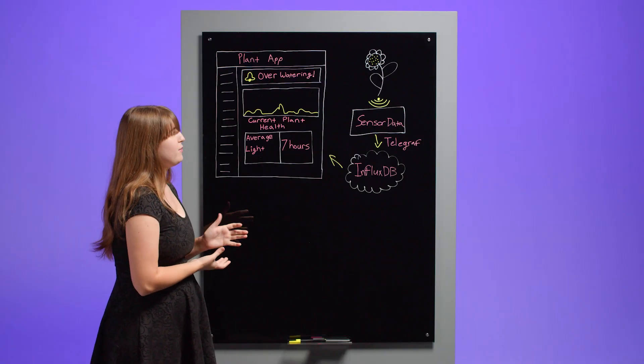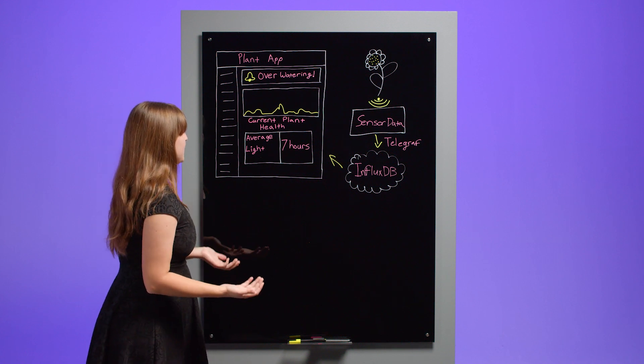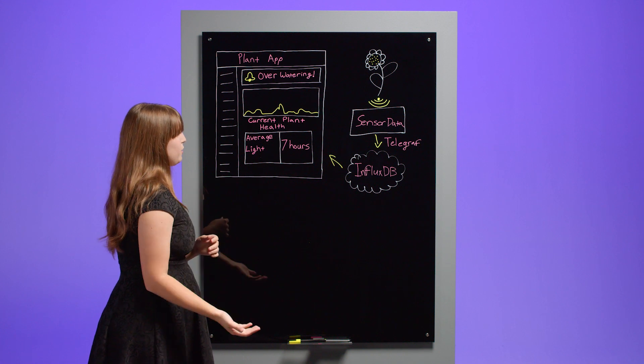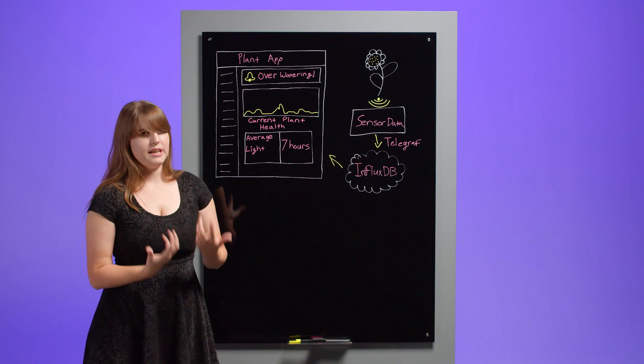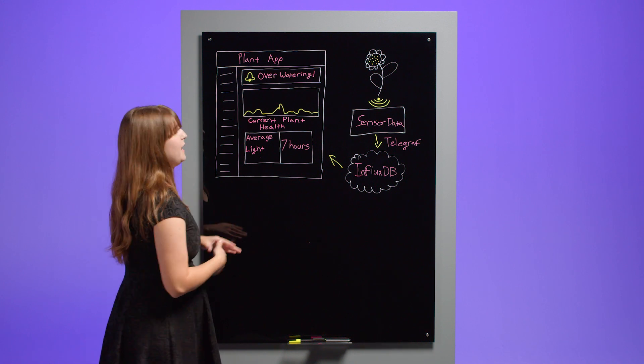Since Influx is made for time series data, it can also downsample that collected data. I can do it over a day, over multiple days, and basically I can get rid of some of the more granular data that I don't really need to hold onto. And that makes my application a lot lighter.